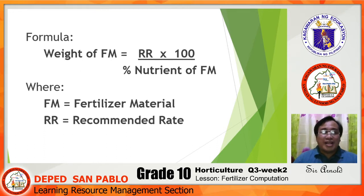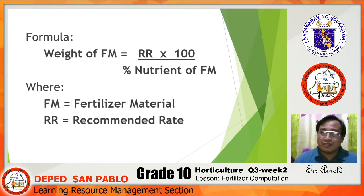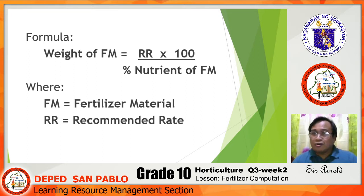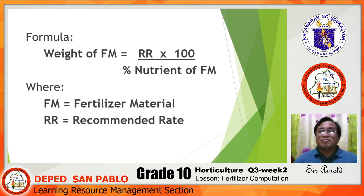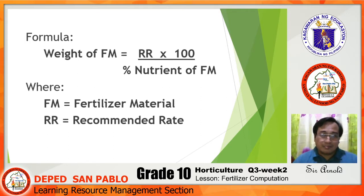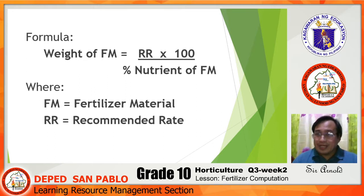The formula for computing the fertilizer amount is: weight of fertilizer material (FM) equals the recommended rate (RR) multiplied by 100, divided by the percent nutrient of that particular fertilizer material.